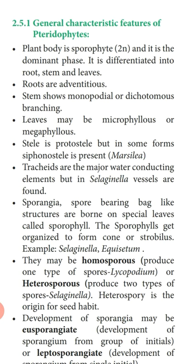Roots are adventitious. The stem shows monopodial or dichotomous branching. Monopodial means the stem has one erect structure — a single complete trunk-like structure. In dichotomous branching, the apical meristematic cells at the tip of the stem undergo division, causing the stem to branch into two. So stems may be monopodial — one single trunk-like structure — or dichotomous, divided into two.